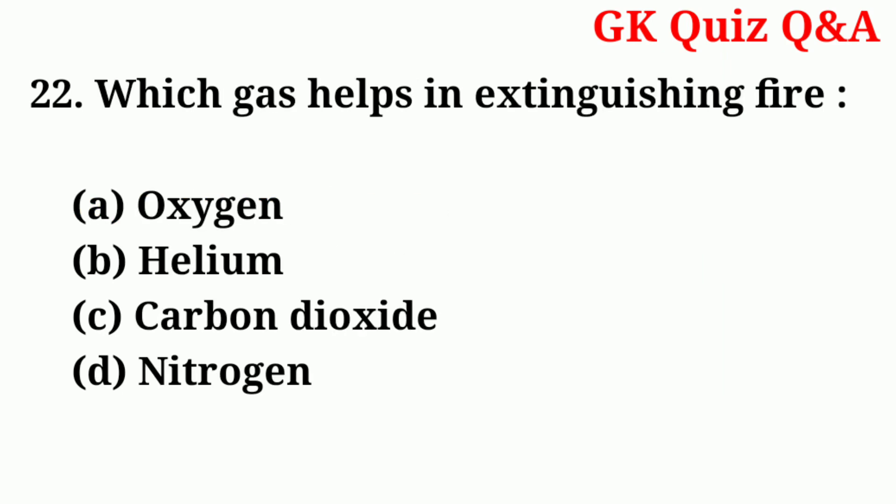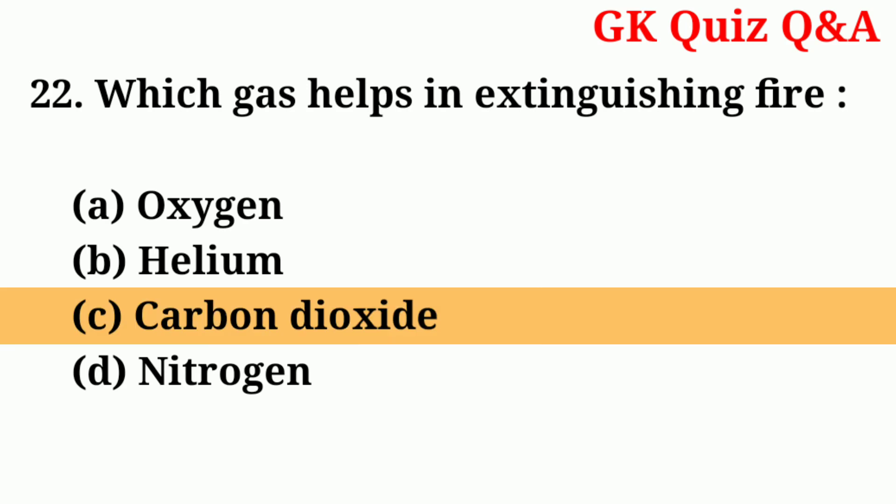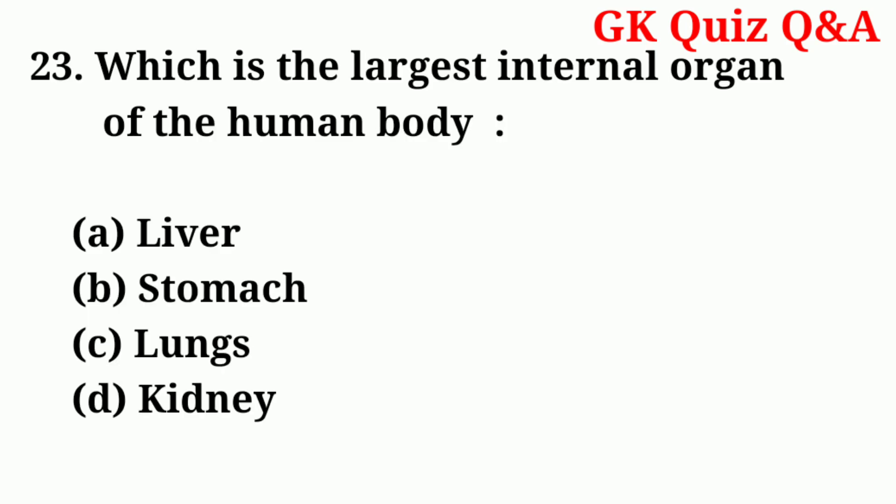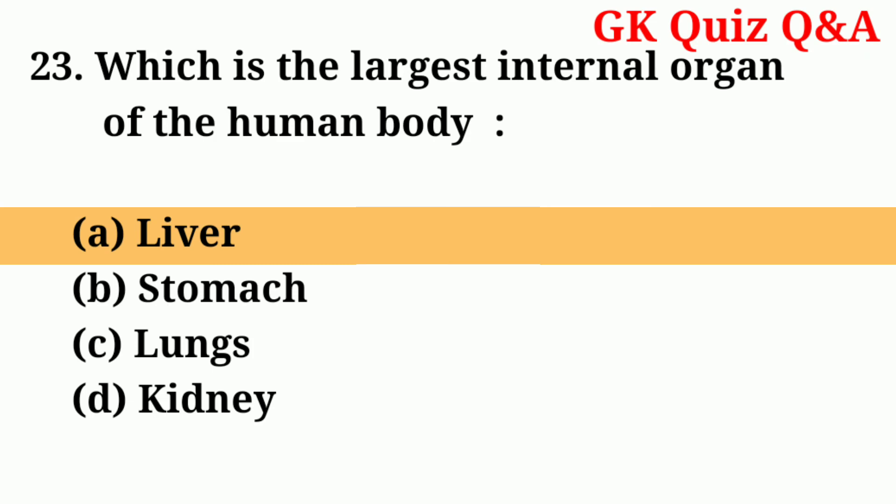Number twenty-two: which gas helps in extinguishing fire? Number twenty-three: which is the largest internal organ of the human body? Answer: number A — liver.